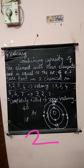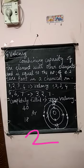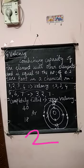The outermost shell of an atom is called valence shell, and the electrons present in that outermost shell are called valence electrons. For calcium, there are 2 electrons in the N shell, so N is the valence shell — the outermost shell. The valence shell is N shell, 2 electrons are present there, so the valence electrons are 2. The number of valence electrons for calcium is 2.